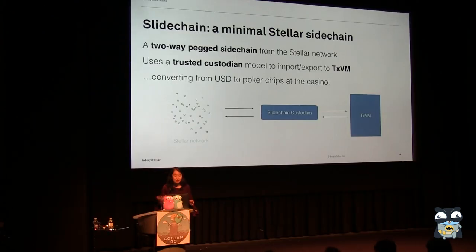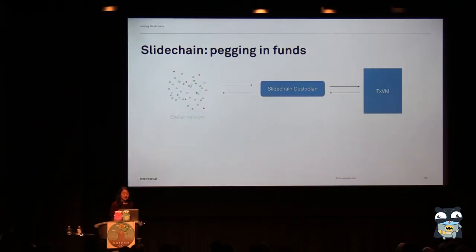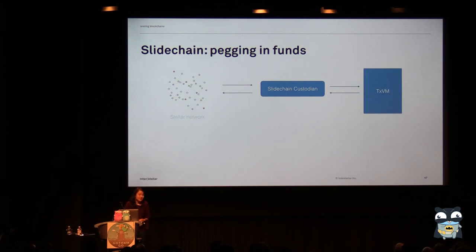There are a variety of different approaches to doing pegging in sidechains. The trusted custodian model is the most trust-intensive, but it seemed the best for doing this sort of proof-of-concept experiment. The way things work in Slidechain is that we're pegging from the Stellar network to a system we've built called TXVM.